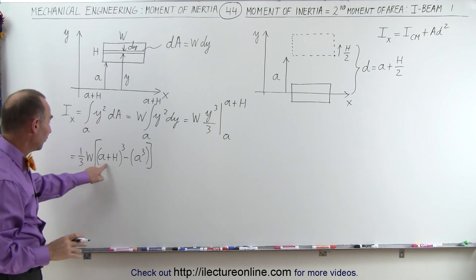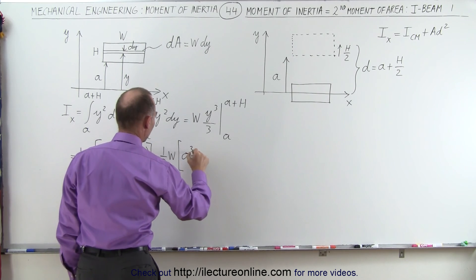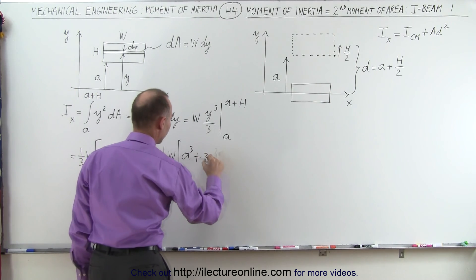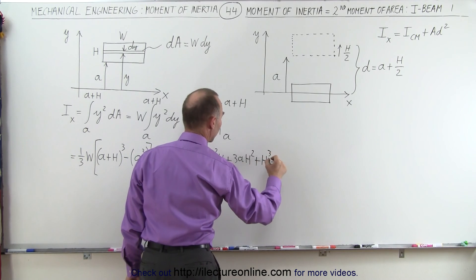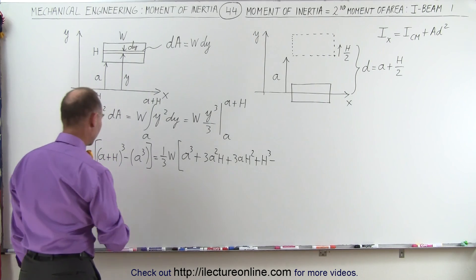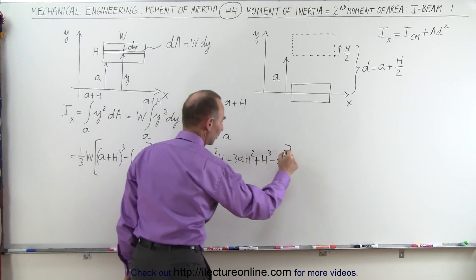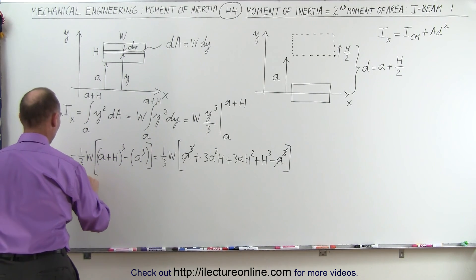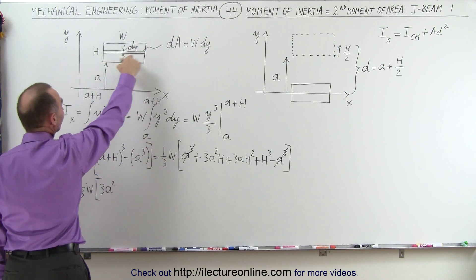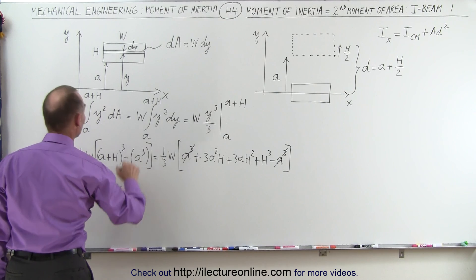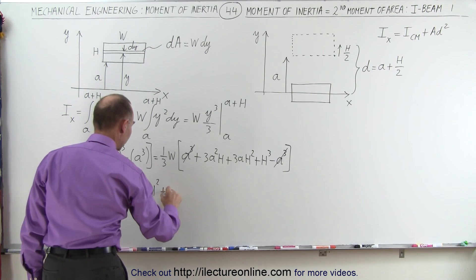Algebraically, we can go ahead and simplify that. We'll expand this portion. So this is equal to one-third the width times A cubed plus 3A²H plus 3AH² plus H cubed, and subtract from that the lower limit, which gives us minus A cubed. That means this A cubed will cancel out with this negative A cubed, leaving us with one-third the width of that portion of the beam times 3A²H plus 3AH² plus H cubed.